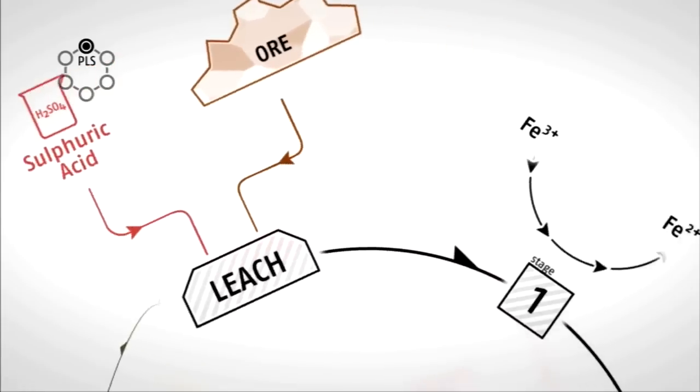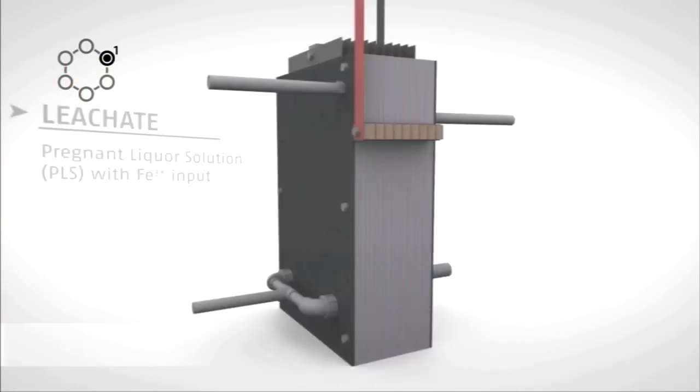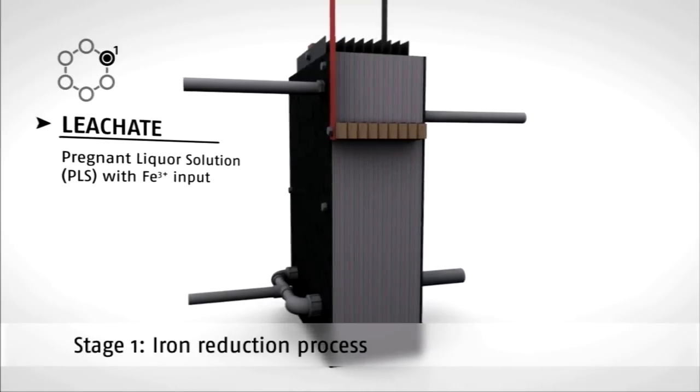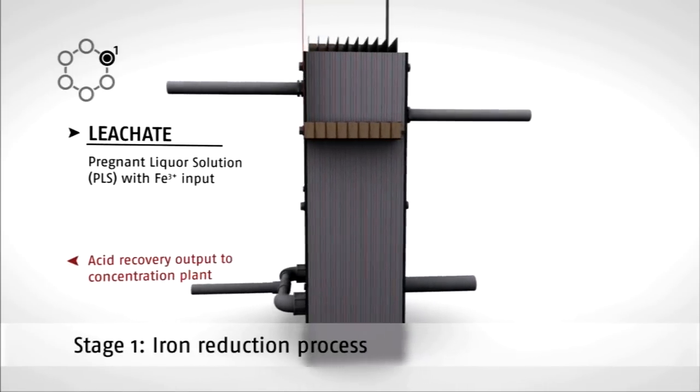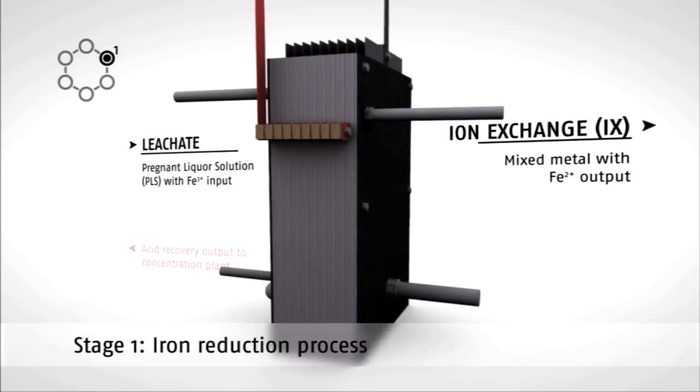Stage 1 reduces ferric iron to ferrous iron. This makes it easier for just the nickel to be extracted. The leachate is passed through a series of electrochemical cells in one direction, while the recovered acid is sent in the opposite direction.